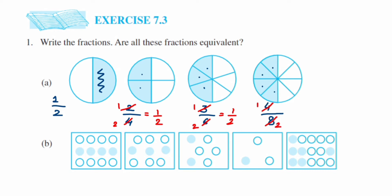Four upon eight: four ones are four, four twos are eight, so this is also one upon two. Every fraction, when reduced to its lowest form, gives one upon two. So yes, all these fractions are equivalent — the answer to the first question is yes.